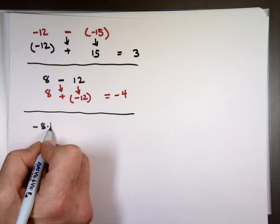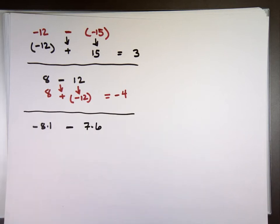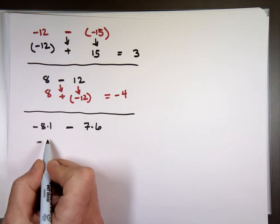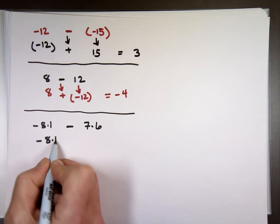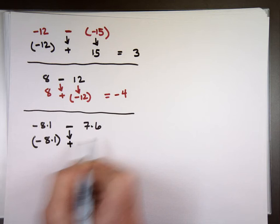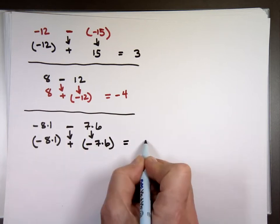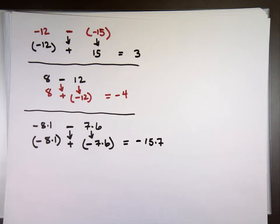Negative 8.1 minus 7.6. Someone said negative 15.7 — let's see if that's right. Negative 8.1, the first number stays the same, this becomes plus and this becomes negative 7.6. Notice the two numbers have the same sign — we add them and keep the sign. Negative 15.7.